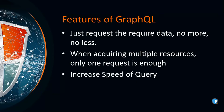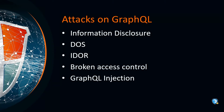Now let's talk about the features of GraphQL. Firstly, just request the required data — no more, no less. For example, an account with fields like name, age, gender, and email ID — you can get only the data you want. Secondly, when acquiring multiple resources, only one request is enough. And lastly, it increases the efficiency and speed of queries. Now let's move on to attacks on GraphQL.